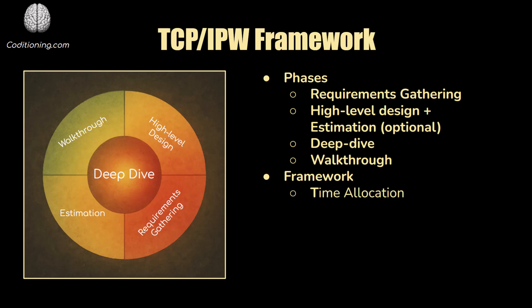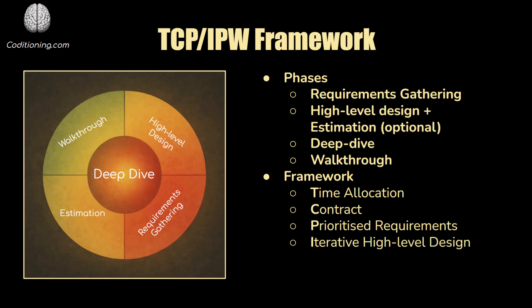So the framework is as follows. T is for time allocation. C is for contract. The first P is prioritize requirements. I is iterative high-level design. The second P is prioritize deep dive — so we have two Ps, and they both refer to this idea of prioritizing things. It's all about the fact that you have time constraints. For real system design it'll take multiple hours, but in an interview you're probably doing this in an hour or 30 minutes. So you have to prioritize things.